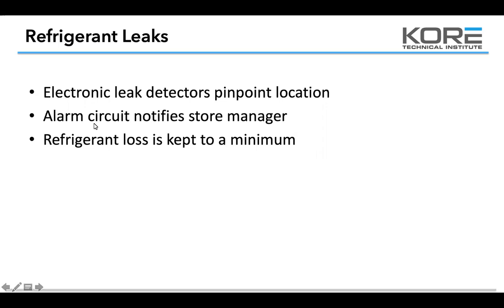If you guys need an H10 for your branch, please give me a call — that's the core recommended leak detector by choice. Alarm circuits notify the store manager when dealing with local leak detection. Any racks now are required to have local leak detection. Whenever you're in the controller, make sure the leak detection is working — this is a critical pain point for customers. If they find out their leak detection is not working, they're not happy. They're required by the EPA to have electronic leak detection over a certain threshold of pounds held in the system.